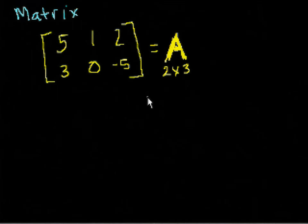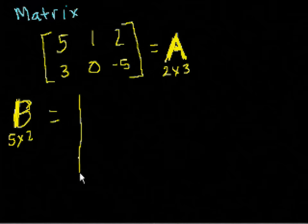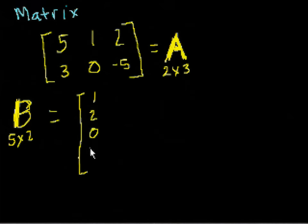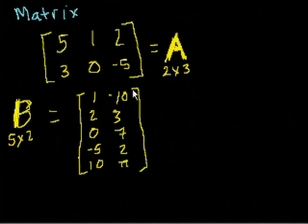So when you say, if I said that B is a 5 by 2 matrix, that means that B would have, I'll just type in numbers: 1, 0, minus 5, 10. So it has five rows, it has two columns. So let's see, minus 10, 3, I'm just putting in random numbers here, 4, 7, 2, pi. That is a 5 by 2 matrix.